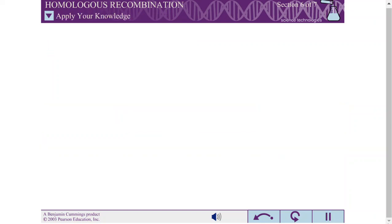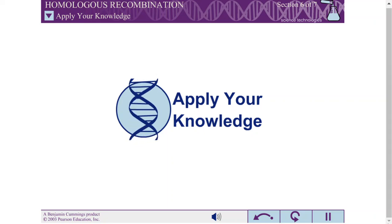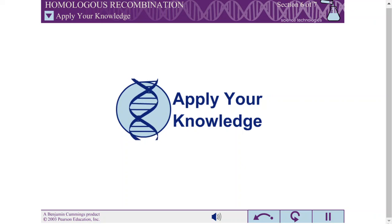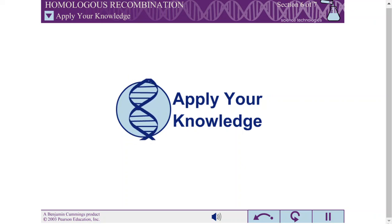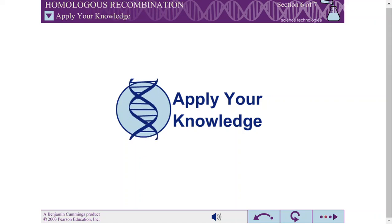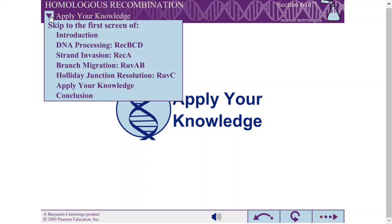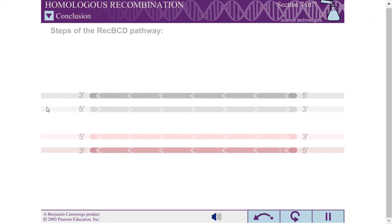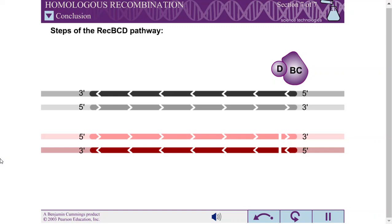Both prokaryotes and eukaryotes use the double-strand break-repair pathway to exchange genetic information between DNA molecules. Although the enzymes involved differ from organism to organism, this pathway can be used in several different cellular processes. Cells use homologous recombination to exchange genetic information between DNA molecules.